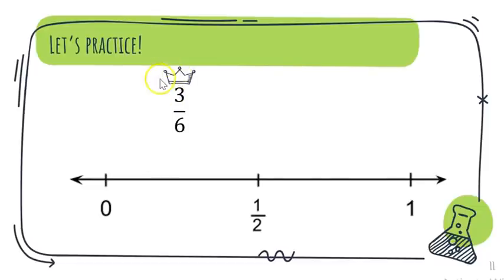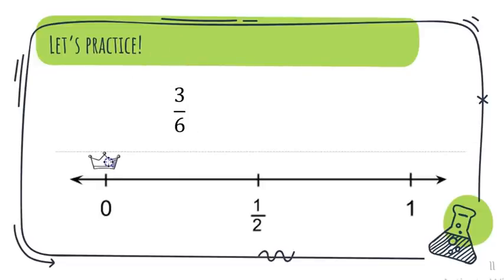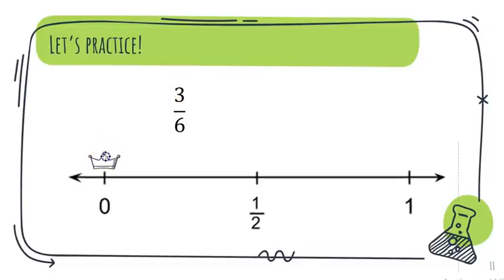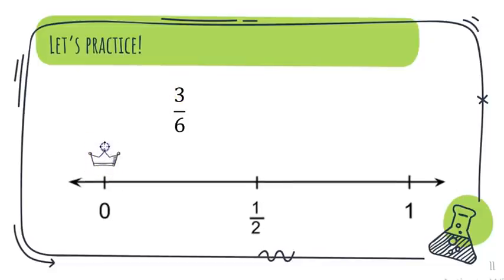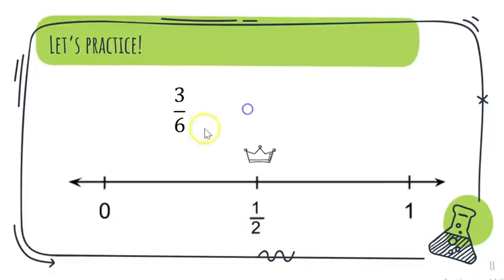The next one is three-sixths. The denominator is six, so to get from zero to a whole I need six spaces. Three pieces — that's not very close to zero. For a half, three plus three is six, so three-sixths is equal to one half.